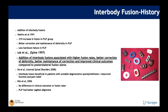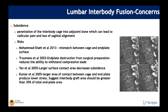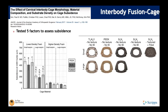There are issues with interbody grafting, subsidence in particular — meaning penetration of the interbody cage into the adjacent bones. Researchers have looked at subsidence for all types of interbody grafts, discussing cage-endplate mismatch, endplate destruction effects on subsidence, and different materials and cage sizing. One more recent study examined cervical cage morphology, material, and substrate density on subsidence.